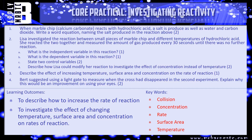Question three: describe the effect of increasing temperature, surface area and concentration on the rate of reaction. It's only worth one mark, so nice and simply, what does it do to that rate of reaction? And then question four: Bert suggested using a light gate to measure when the cross had disappeared in the second experiment. Explain why this would be an improvement on using your eyes. Light gates are things that measure the intensity of light coming through - think about how that could be useful in the experiment we've just looked at. Pause the video and have a go.